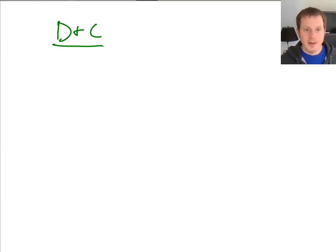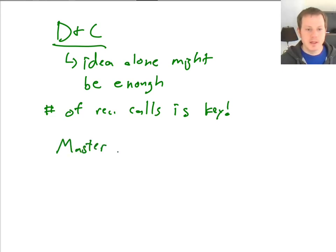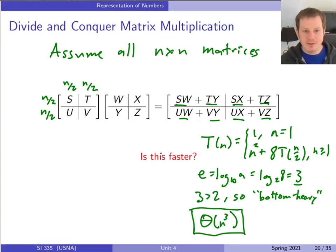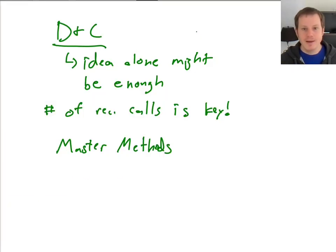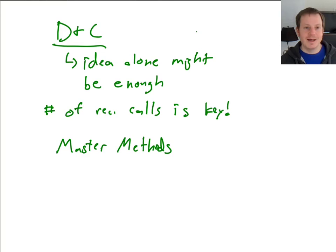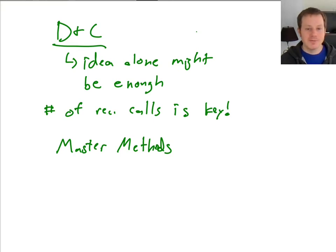That's it for this unit. This unit has really been all about divide and conquer, and we also saw these master methods, which are very useful for more complicated kinds of recurrences. We introduced two divide and conquer matrix multiplication algorithms and didn't have to spend a lot of time expanding everything out, because we now have the master method as a tool to quickly determine the running time of a recursive algorithm. I hope this was an interesting exploration of numerical algorithms and some insight into the current state of research.